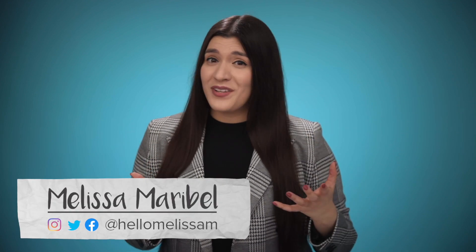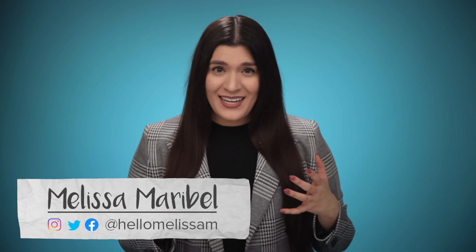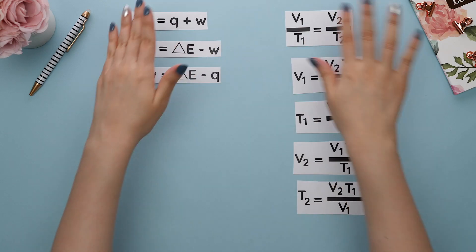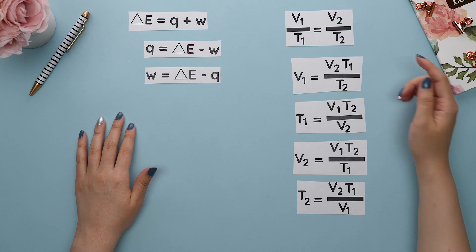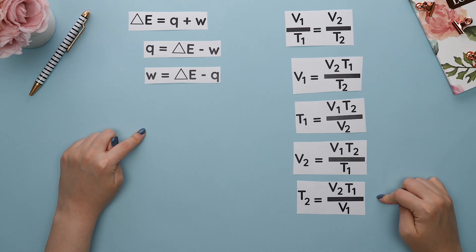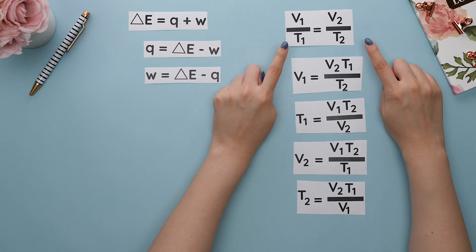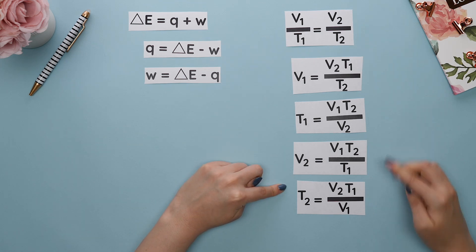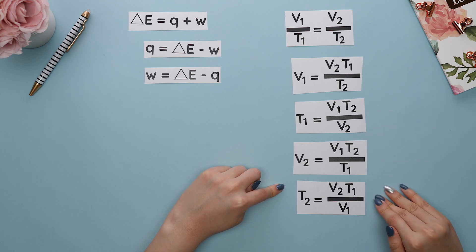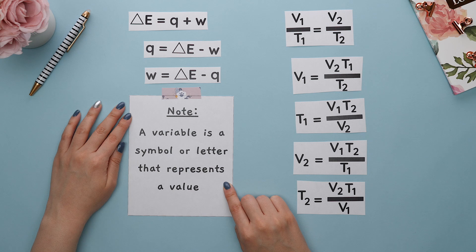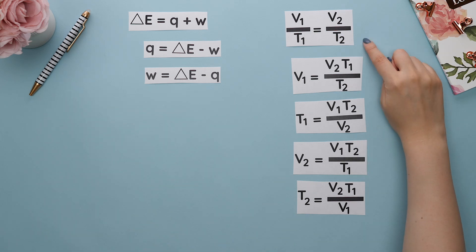You're going to see a lot of formulas in chemistry, several of which you will be required to memorize. But instead of having to memorize all of the different formulas of each formula solved for each variable, your life will be so much easier if you understand how to rearrange one formula into multiple formulas all solved for different variables. Note: a variable is a symbol or letter that represents a value.